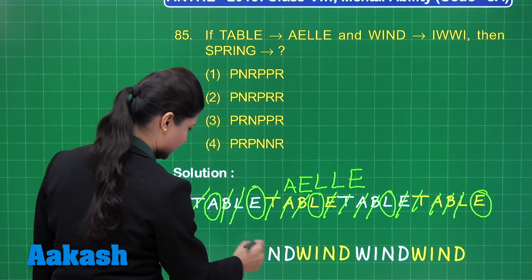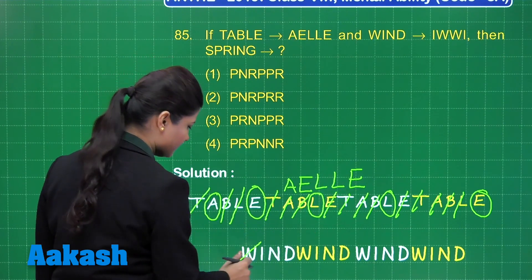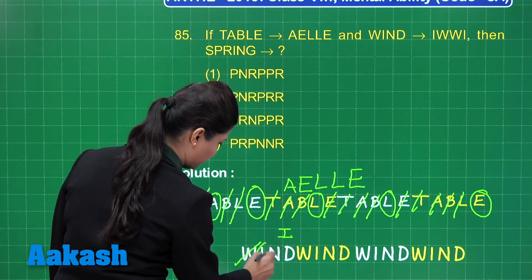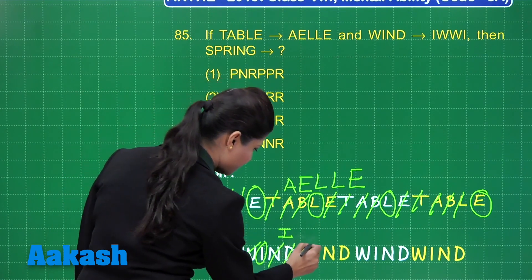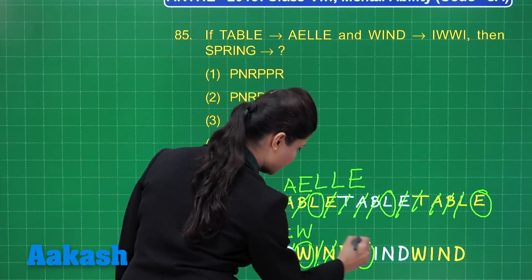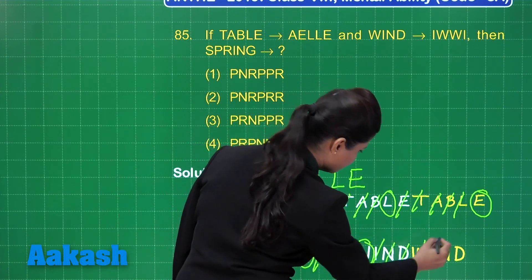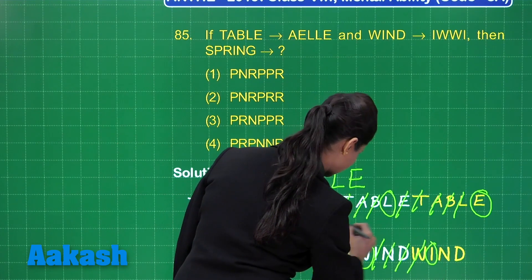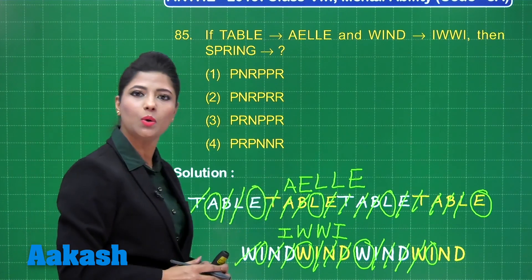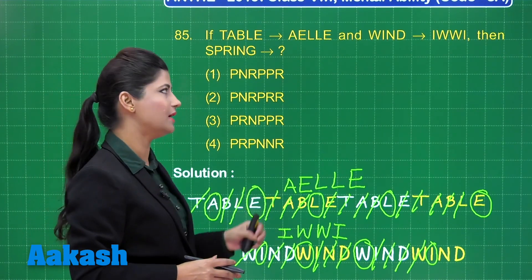In similar manner, when you write 'wind' again and again: leaving one alphabet you reach I, leaving two alphabets you reach W, leaving three alphabets you reach W, and leaving four alphabets you reach I. 'Table' was a five-lettered word so we had coding of five letters; 'wind' was a four-lettered word so we had coding of four letters.